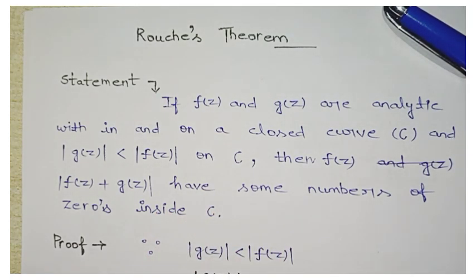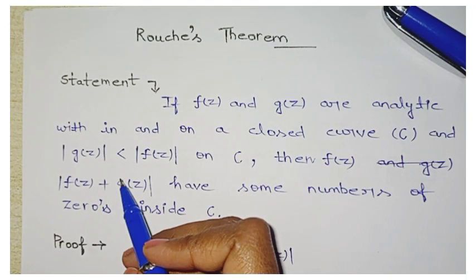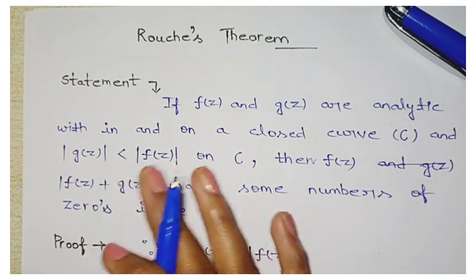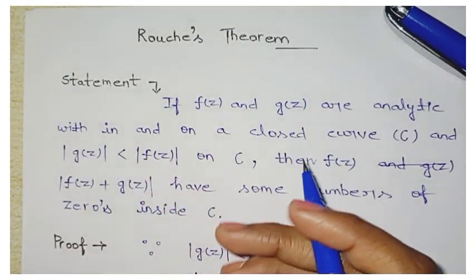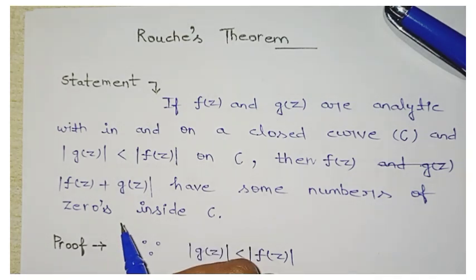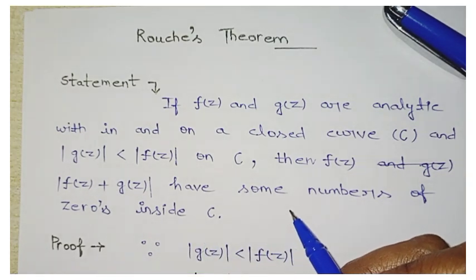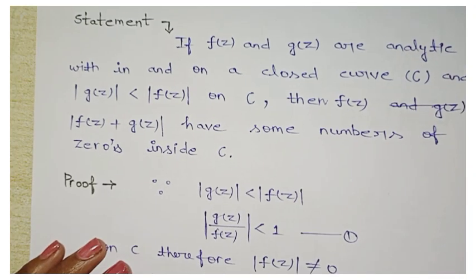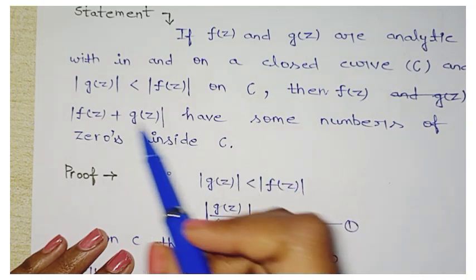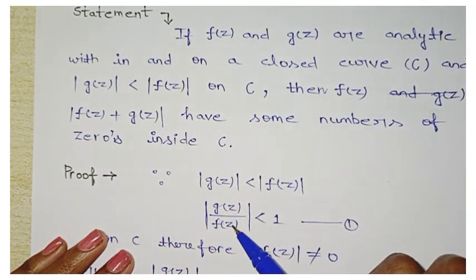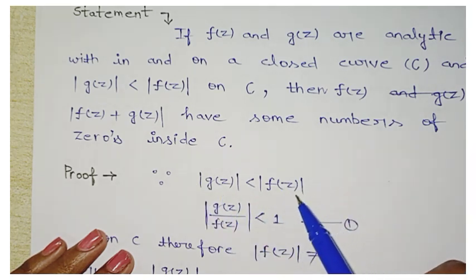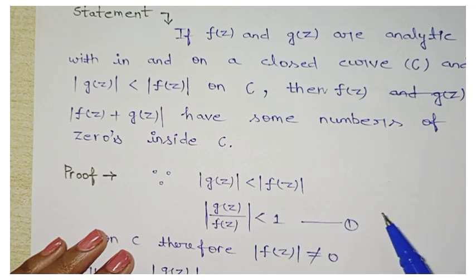So to summarize: our two functions f(z) and g(z) are analytic within and on a closed curve C, and mod of g(z) is less than mod of f(z) on C — meaning the g(z) function is smaller than f(z) on C. Now for the proof, we start from: mod of g(z) < mod of f(z), which we can also write as mod of g(z)/f(z) < 1. This is equation number one.